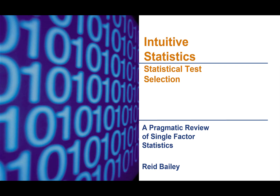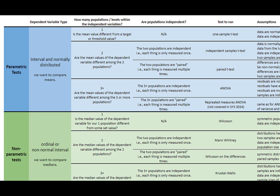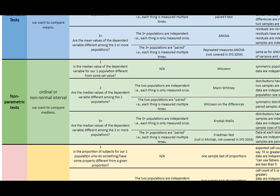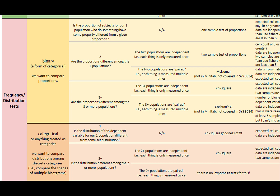Hey, I'm Reed Bailey. We're back for part two of the statistical test selection video focused on single factor statistics. I want to remind you we have a statistical test selection guide available at the URL shown on the screen. In part one, we talked about parametric tests and non-parametric tests, which means it's time now to get down to frequency and distribution tests — things like test of proportions and chi-square.